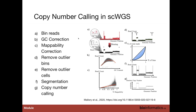Given that coverage is low for these sequencing assays, these really are copy number primary assays, and the first step is a copy number analysis almost certainly. Copy number calling in single cell whole genome sequencing: reads are binned across the genome into regular or irregular length bins, followed by GC correction and mappability correction, removal of outlier bins, removal of outlier cells, and then segmentation and copy number calling — sometimes done jointly.